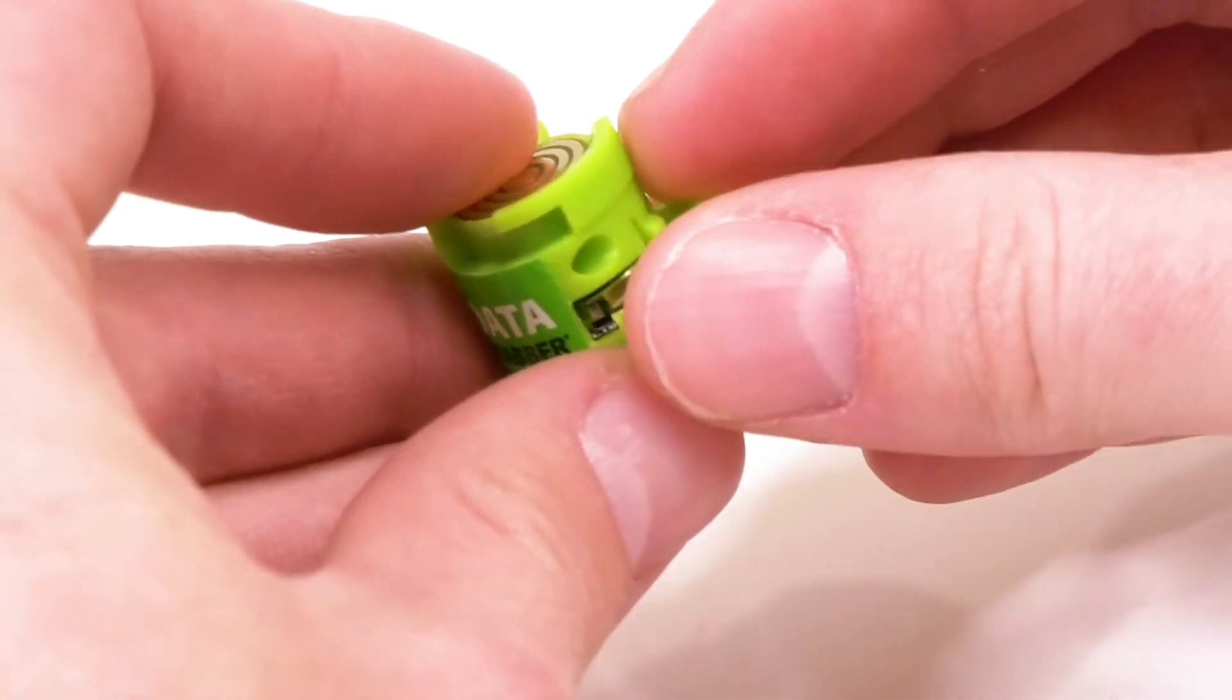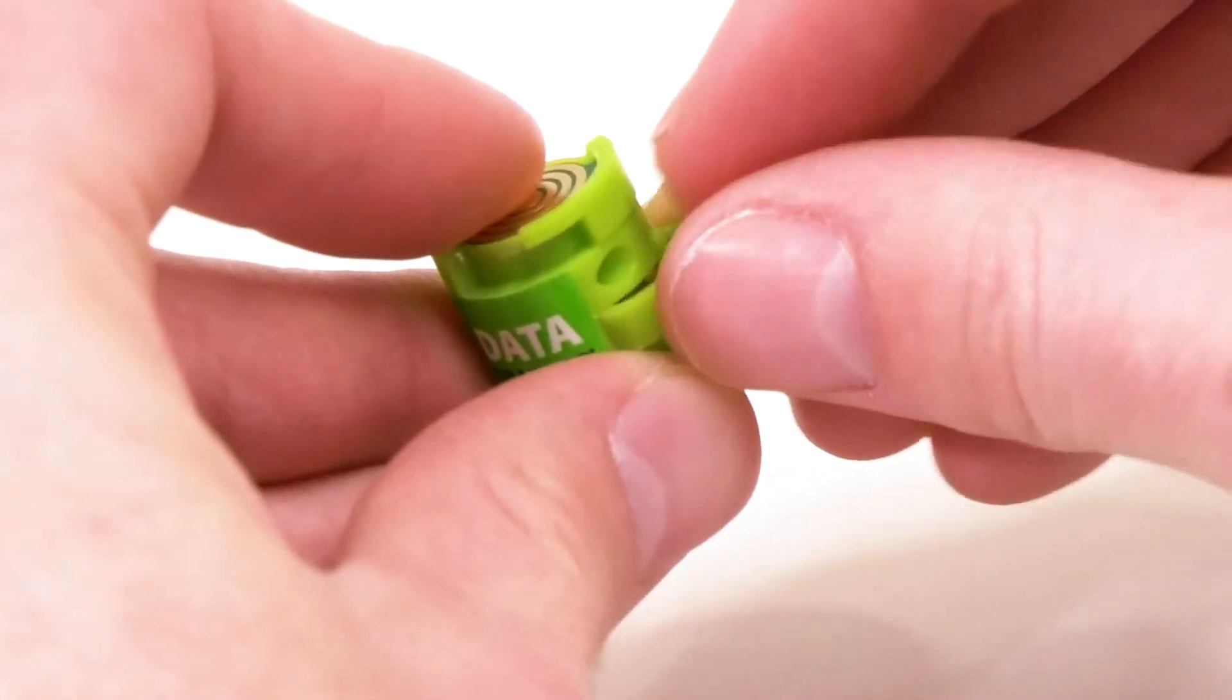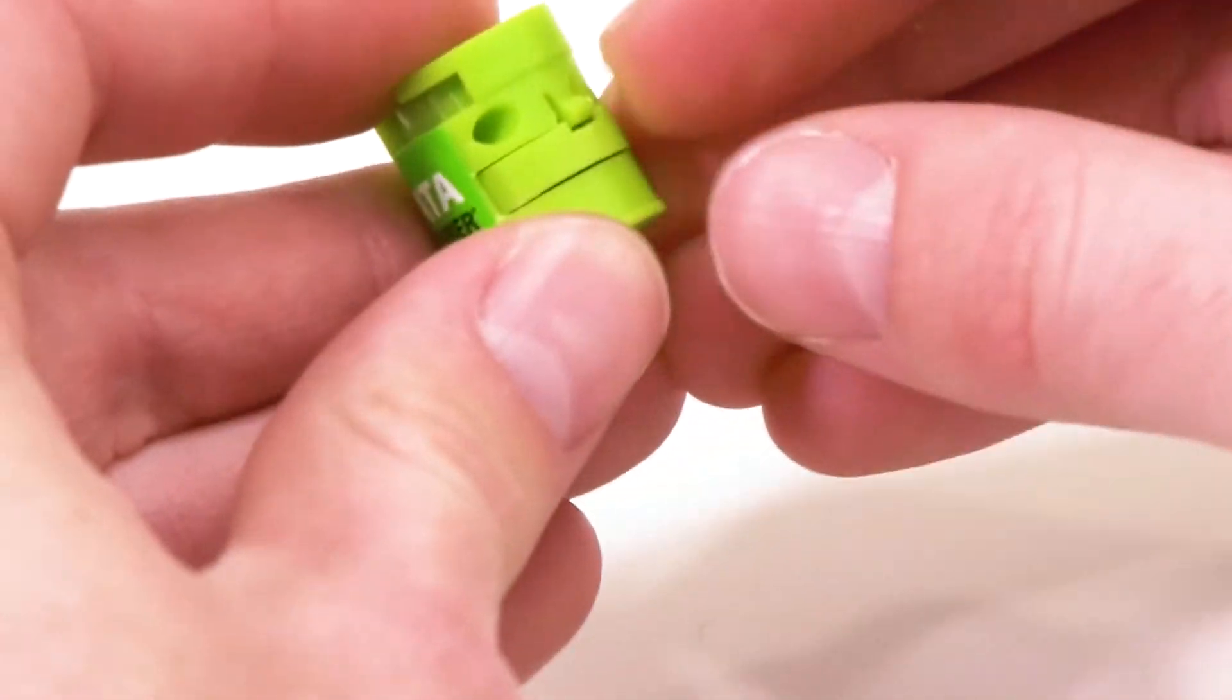Replace the battery compartment cover by guiding the arms of the cover inside the slot and pushing until the cover snaps into place.